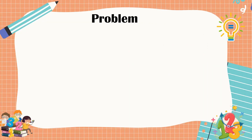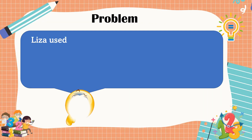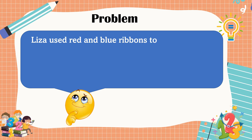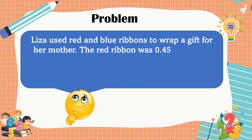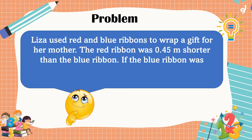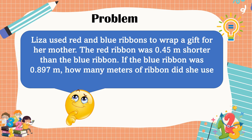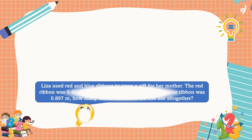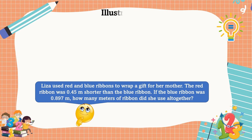This is our second problem: Lisa used red and blue ribbons to wrap a gift for her mother. The red ribbon was 0.45 meter shorter than the blue ribbon. If the blue ribbon was 0.897 meter, how many meters of ribbon did she use altogether? This second problem is a non-routine problem — let's use an illustration to help us visualize and solve it.